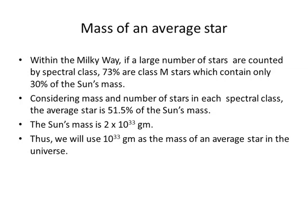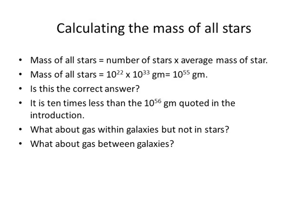Next, we need to know the mass of an average star. Within the Milky Way, if a large number of stars are counted by spectral class, 73% are class M stars. A class M star contains only about 30% of the sun's mass. Considering mass and number of stars in each spectral class, the average star is 51.5% of the sun's mass. Since the sun's mass is 2 times 10 to the 33rd grams, we will use 10 to the 33rd grams as the mass of an average star. Now that we know the mass of an average star and the number of stars, we can calculate the mass of all stars — that would be 10 to the 55th grams.